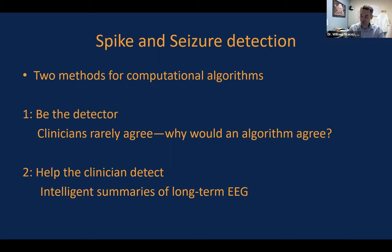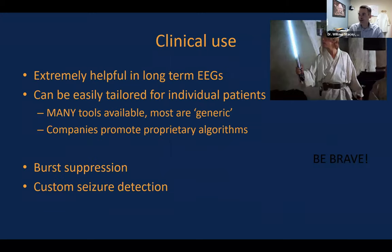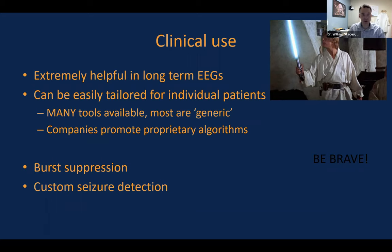What I'd like to do is a practical demonstration. Before that, I'd like to tell you what we're getting at. I tell all of our fellows I want them to be Jedi EEGers — a reference to Star Wars, where Luke Skywalker became a true Jedi Knight when he was able to build his own lightsaber. That's what I'd like to show you today: how to build your own detector so that you can do whatever you want with it. I think these types of tools are extremely helpful when we have long-term EEGs, and if we understand what these tools are doing we can use them to really help us.